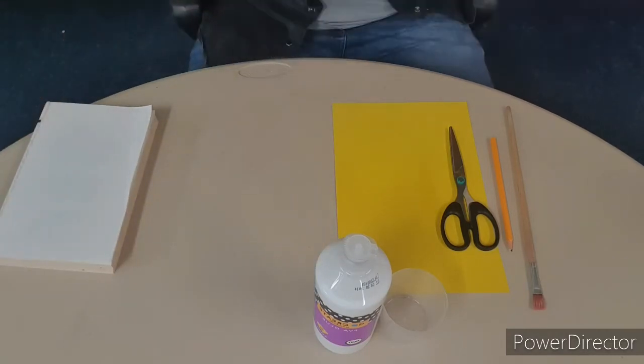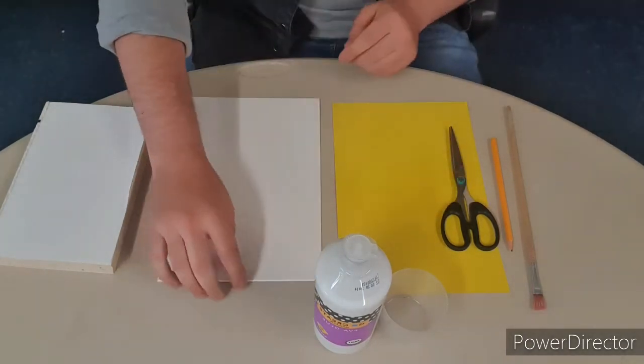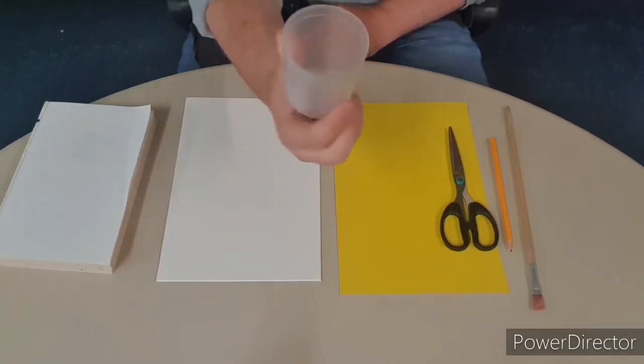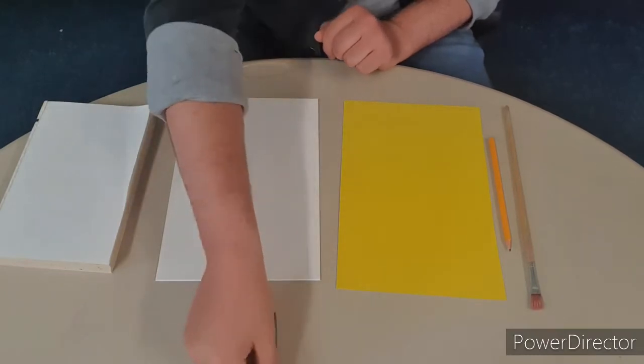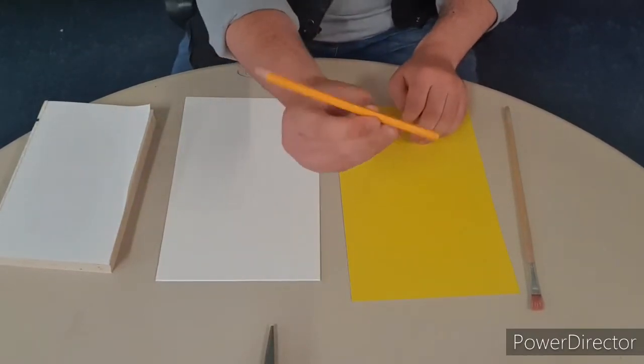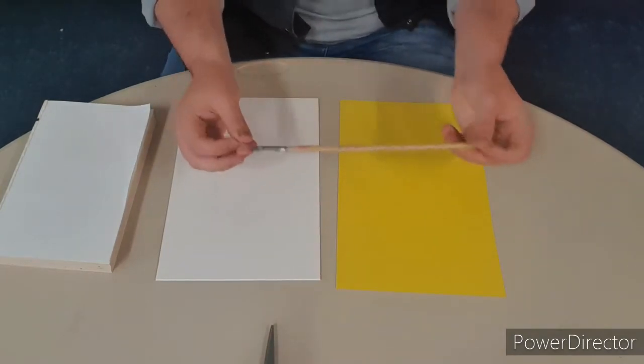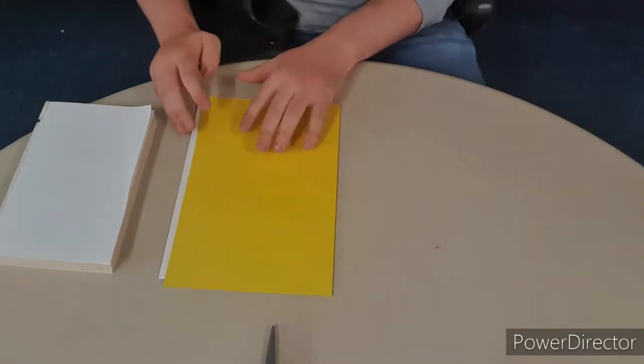For this activity you're going to need your book, the one we chopped out. You're going to need a firm bit of card or canvas, some PVA glue, a place to put your glue, a pair of scissors so be careful, a pencil, your trusty glue brush, and a thinner bit of card that's quite flexible.